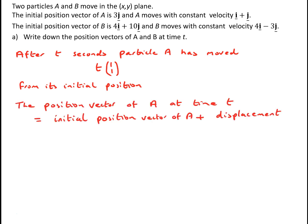The position vector of A at time t will be the initial position vector of A plus the displacement. So that is going to be (0, 3) plus t times (1, 1). Here (0, 3) is the initial position vector of A, and the displacement during time t is t times (1, 1). This can be written as the single vector (t, 3 + t).